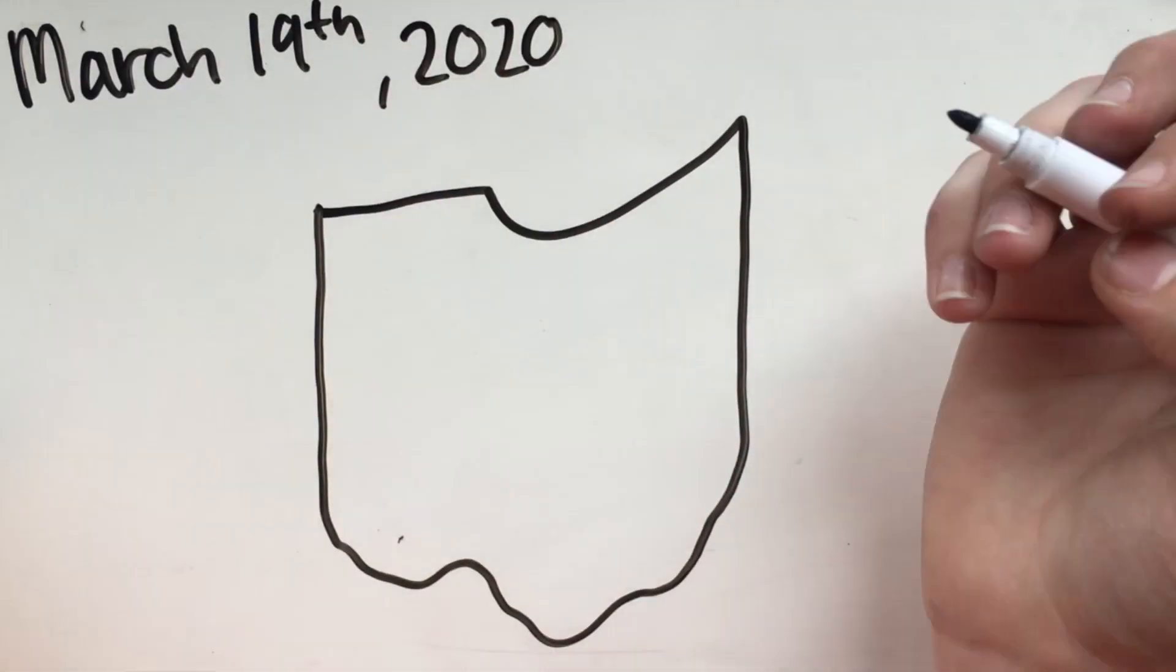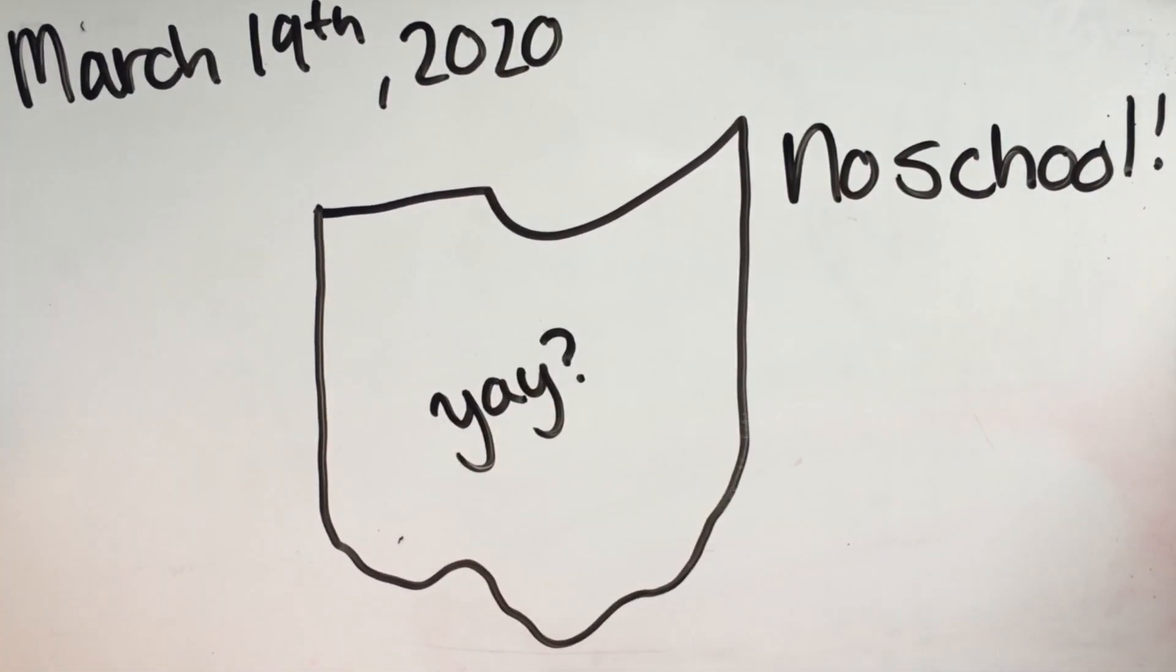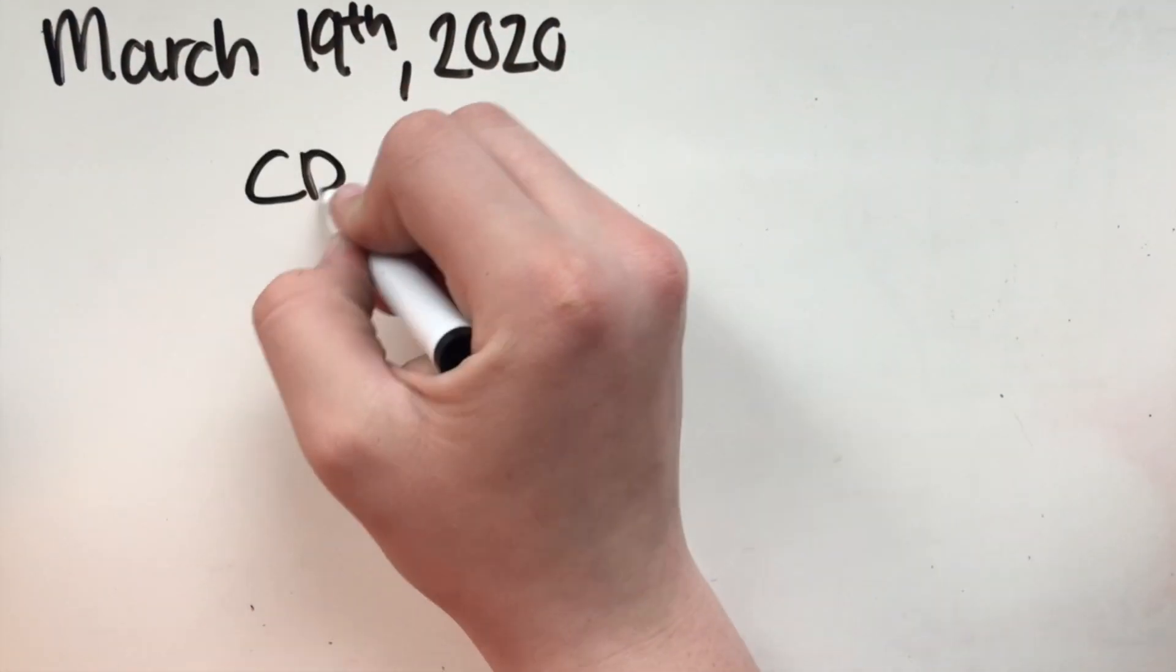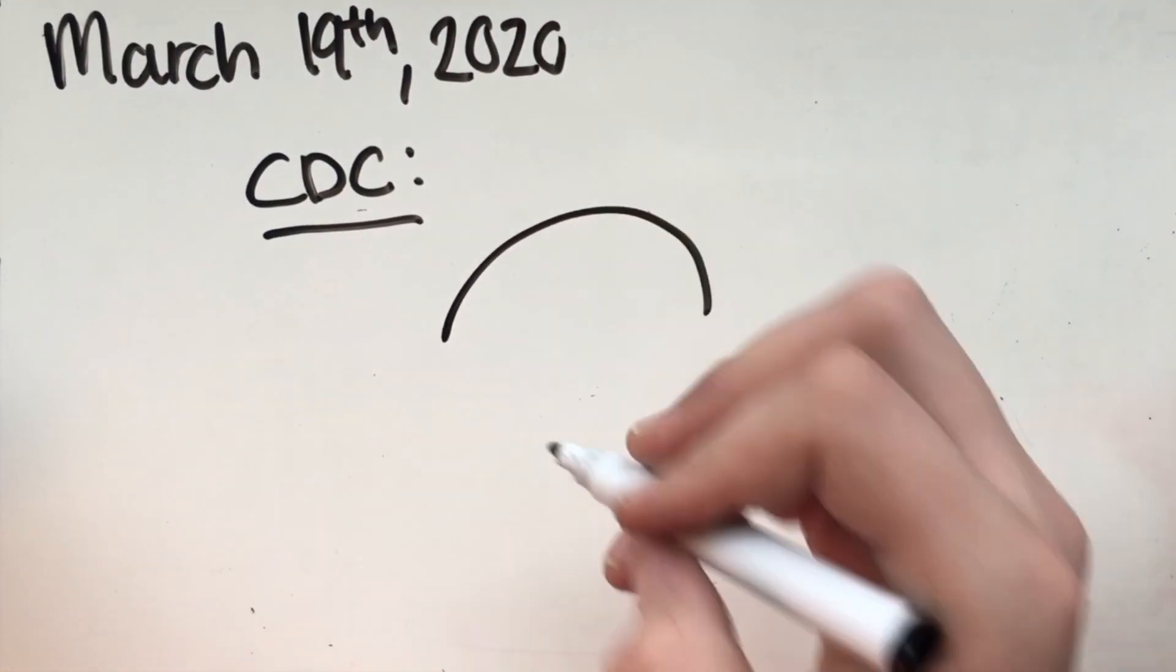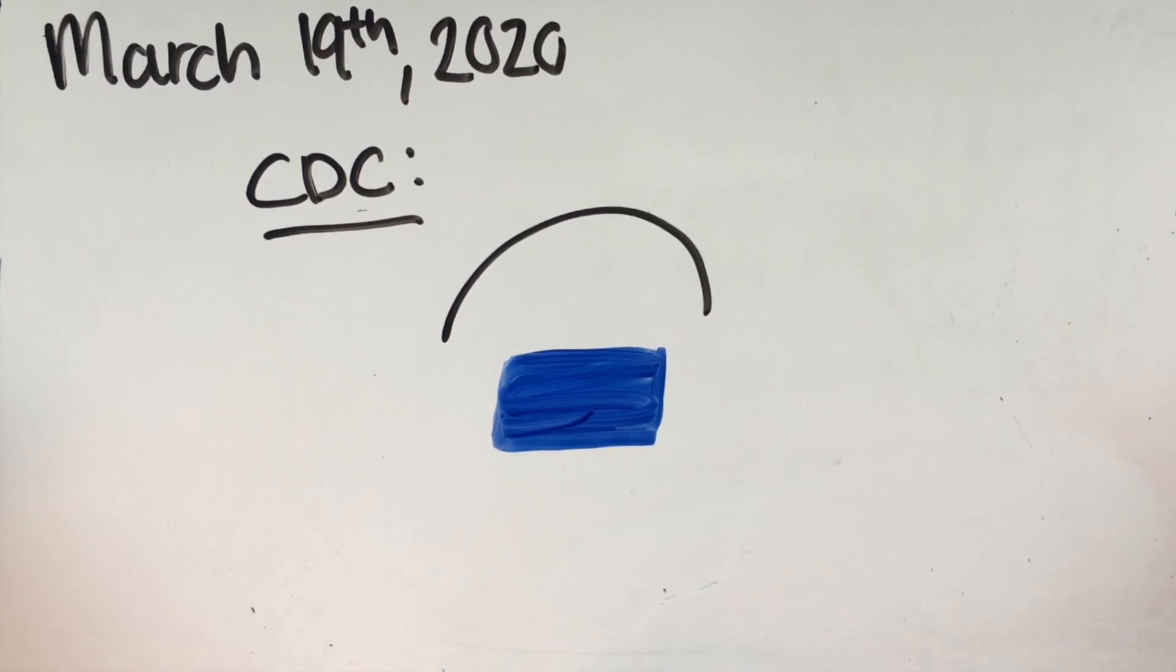On March 19th, Ohio Governor Mike DeWine canceled school in Ohio, and has since limited almost all interaction. That same day, on March 19th, the CDC instructed medical professionals how to use homemade masks if PPE is not available. Later that day,